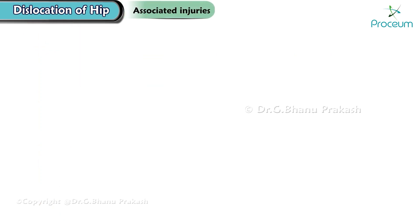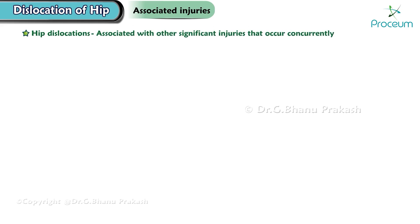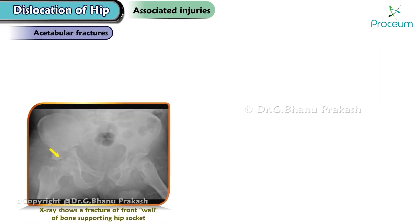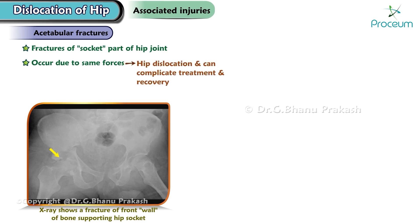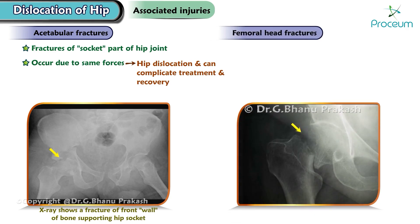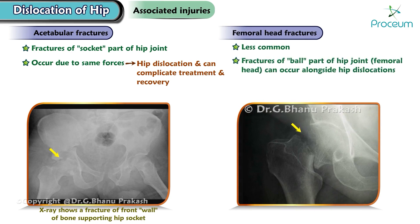Associated injuries. Hip dislocations are frequently associated with other significant injuries that occur concurrently. Common accompanying injuries include acetabular fractures, which involve the socket part of the hip joint and can complicate treatment and recovery. Femoral head fractures, although less common than acetabular fractures, can also occur alongside hip dislocations and can contribute to long-term complications such as avascular necrosis.